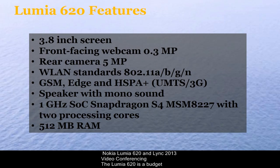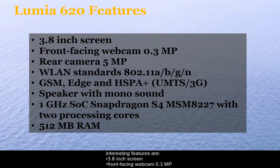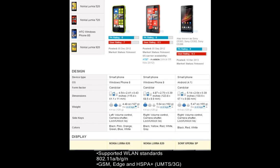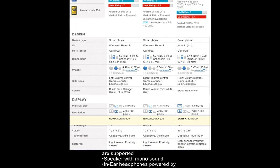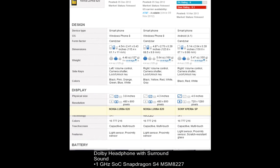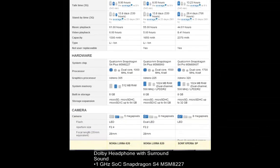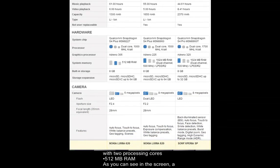The Lumia 620 is a budget smartphone based on Windows Phone 8. Its price is around $310. From a Lync point of view, the interesting features are its 3.8-inch screen, a front-facing webcam of 0.3 MP, a rear camera of 5 MP able to record 720p videos, supported WLAN standards, GSM, Edge, and HSPA Plus, speaker with mono sound, in-ear headphones powered by Dolby headphone with surround sound, 1 GHz Snapdragon with two processing cores, and 512 MB RAM.